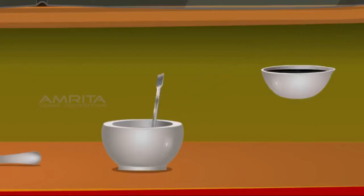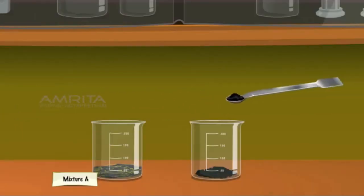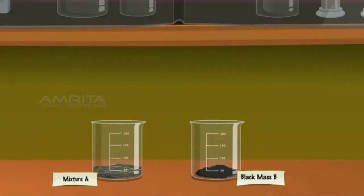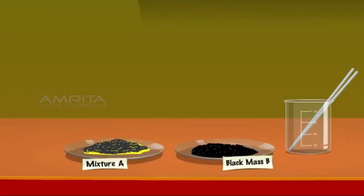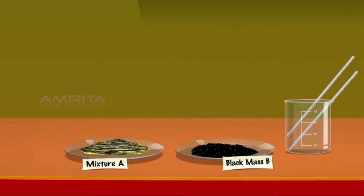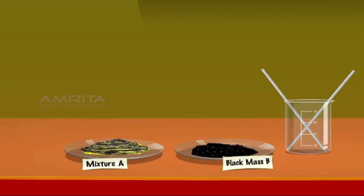Cool and transfer the contents into a mortar and powder this using a pestle. Transfer the powdered contents into another beaker and label it black mass B. Test on the basis of appearance: take small quantities of mixture A and black mass B in two different watch glasses. In mixture A you will see yellow powder in which some iron filings are visible. In black mass B, no iron filings are visible. Thus a mixture is heterogeneous and a compound is homogeneous in nature.